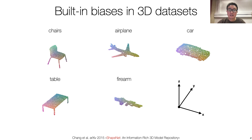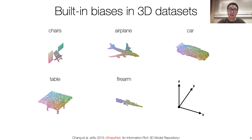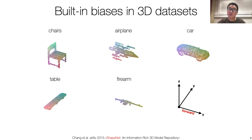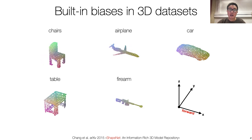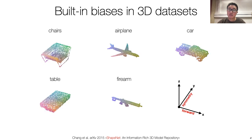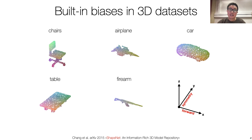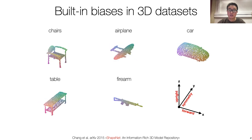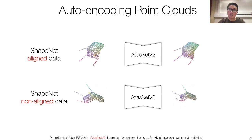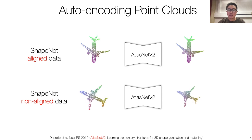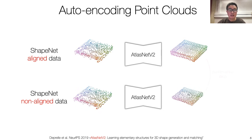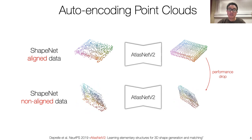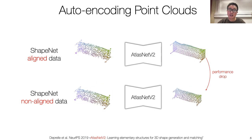ShapeNet models can be pre-aligned in a canonical frame, and the cardinal axes have a semantic meaning: the x-axis is aligned with the natural forward direction, the y-axis reveals the reflectional symmetry, and the z-axis encodes the upright direction. This bias is critical in many methods. For example, AtlasNet does a good job reconstructing point clouds when the dataset is aligned, but its performance drops significantly when training with randomly rotated objects.